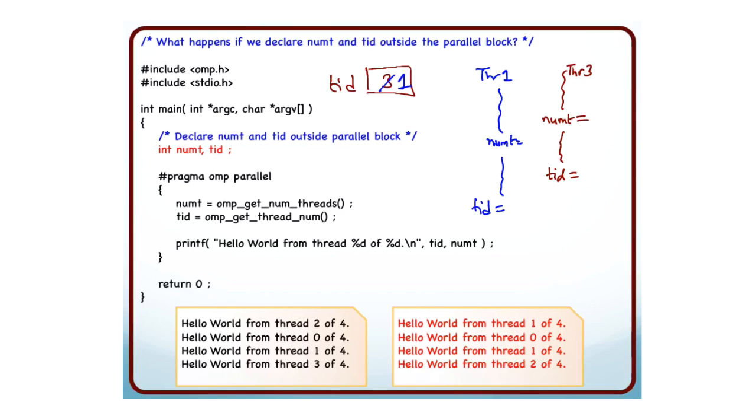So now tid has value 1 and then thread 3 went ahead and called printf and when it passed the parameter tid, what was actually passed? 1 got passed. And similarly, thread 1 eventually called printf at some point in time.